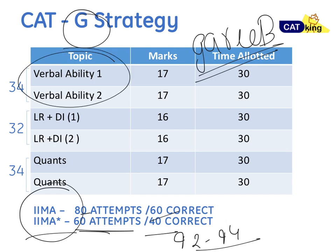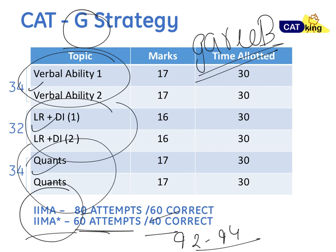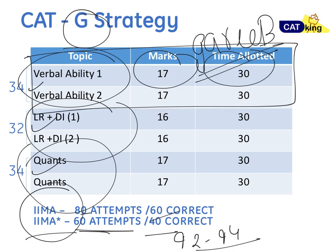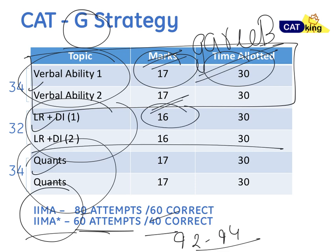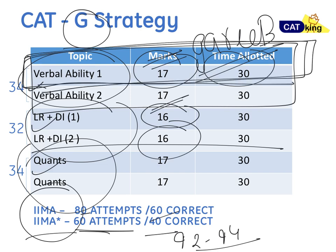The first section, Verbal Ability, has 34 questions; the second section, LR plus DI, has 32 questions; and the third section has 34 questions. As human beings, we're really good at achieving small targets. So I've broken down each CAT section into two pieces of 17 questions each. You need to divide the entire CAT paper into 30-minute slots, targeting a minimum of 10 to 13 questions in each slot. The numbers I mention refer to questions, not marks.